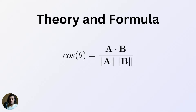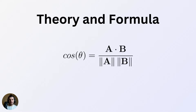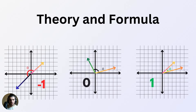Let's get into the theory — the formula for cosine similarity is pretty simple. We have cosine of the angle theta equal to A dot B divided by the magnitude of A times the magnitude of B, where A and B are two non-zero vectors of the same length. This gives us a quantity that is bounded between minus one and one because of the limits of the cosine function.